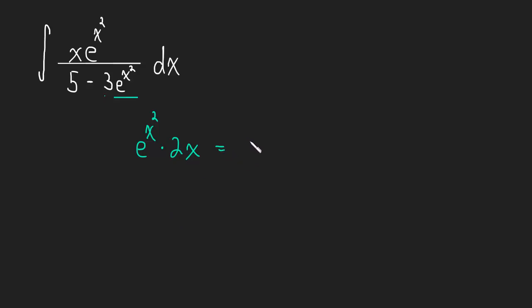Rearranging this, we have 2x e to the x squared. We can always adjust for constants, so basically we have the derivative in the numerator, or something close enough. So we have in the denominator a function and its derivative in the numerator. Why don't we start with that for our u-sub.